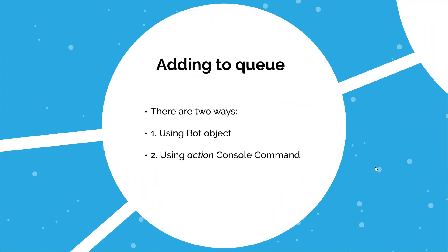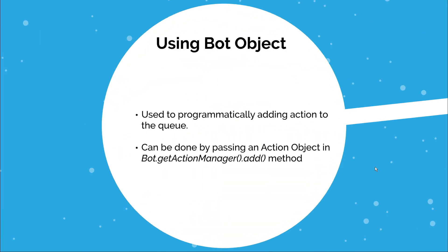So now let's see how to add the action to the queue. There are two ways to add an action to the queue. The first way is to do it programmatically by using the bot object, and the second way is by using console commands. We will look into both of them. For adding the action to the queue using the bot object, you just need to use the method bot.getActionManager.add and then pass in the object of the action you want to add. That's it.